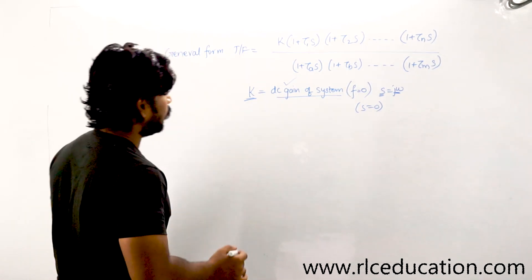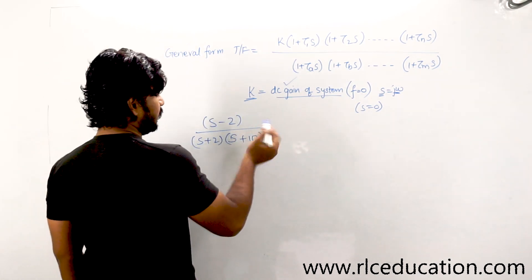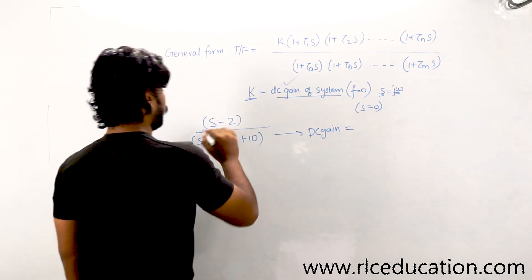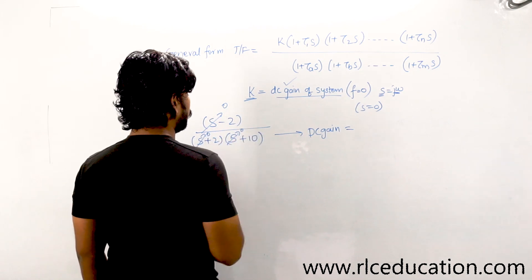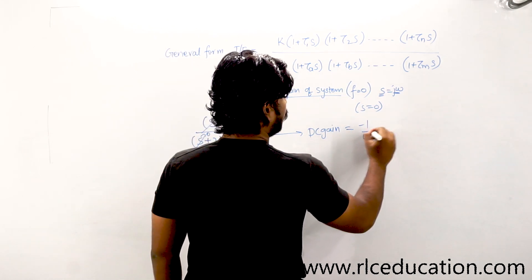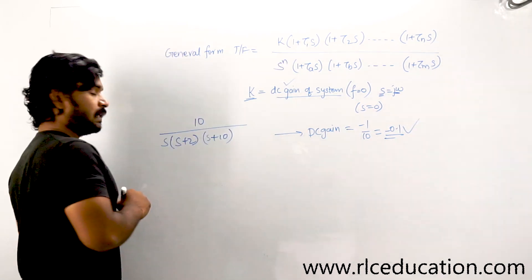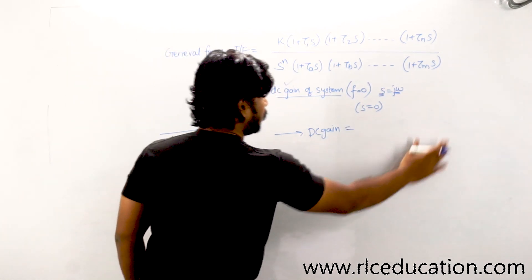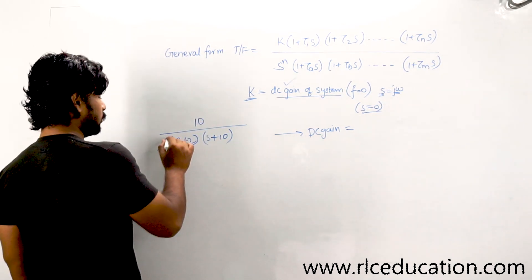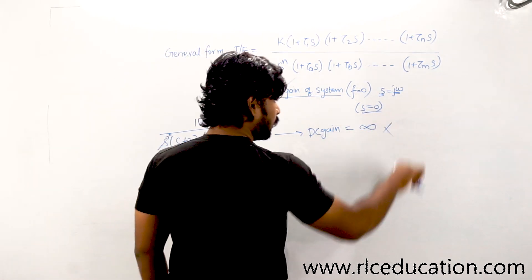For a given example system, to find the DC gain, put s equal to zero. If you put s = 0 everywhere, you get −2 divided by (2 × 10), which gives −1/10 or −0.1 as the DC gain of the system. Now for another system, if you put s = 0 and the whole denominator becomes zero, then the DC gain would go to infinity — that becomes a problematic case.